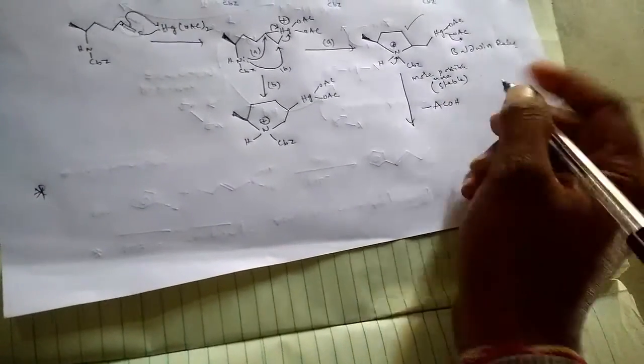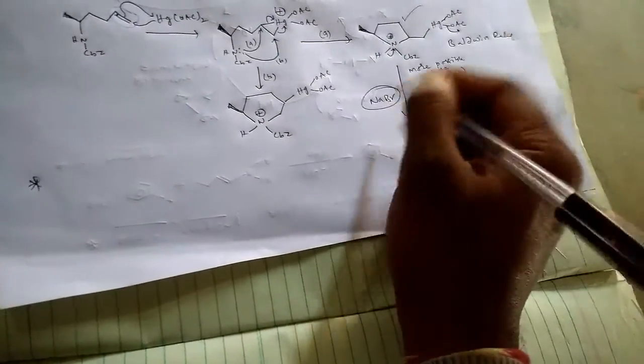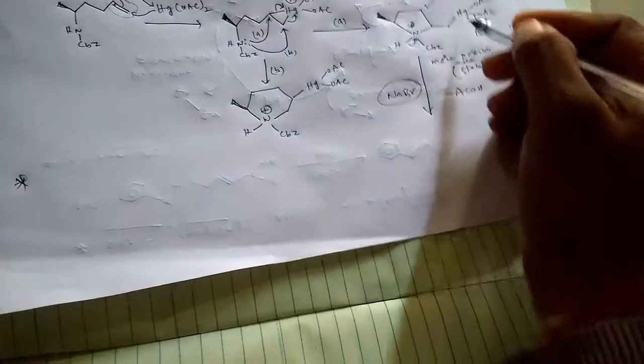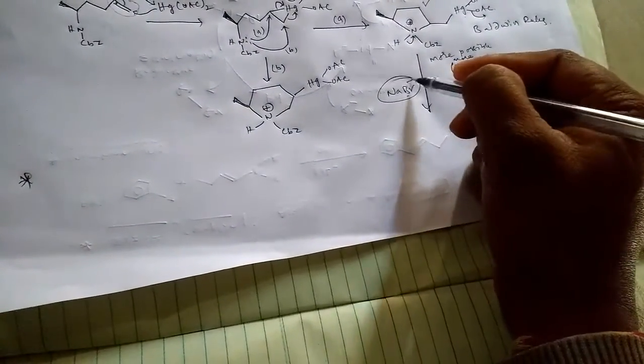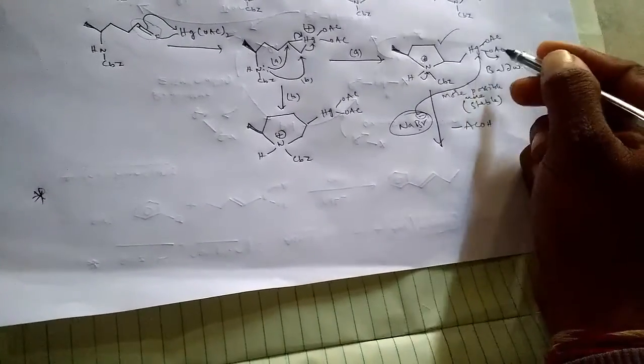By the loss of acetic acid and by the addition of sodium bromide, which is given in the reaction conditions, okay, so this bromine attacks here on mercury. This negative charged bromine attacks on mercury and removal of acetate.